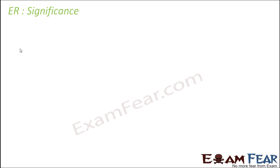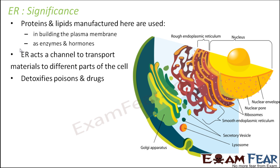Now let us look at the overall significance of endoplasmic reticulum. Proteins and lipids manufactured here are used in building the plasma membrane, as enzymes and hormones. Endoplasmic reticulum acts as a channel to transport materials to different parts of the cell. It detoxifies poisons and drugs — this is taken care of by smooth ER. Protein synthesis is taken care of by rough ER, and lipid synthesis by smooth ER. Whatever proteins or lipids are synthesized here, they are transported out of the endoplasmic reticulum to different parts of the cell.